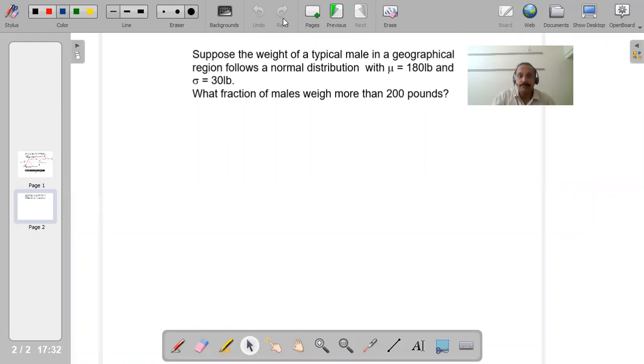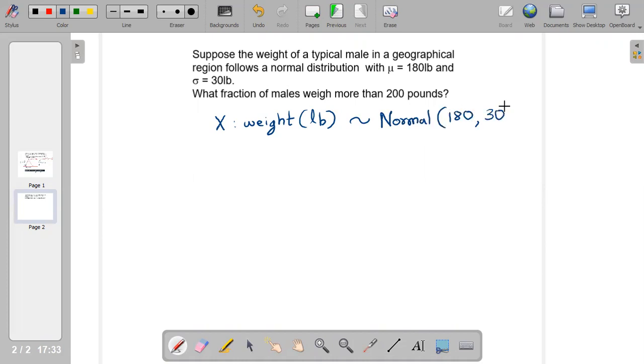So as has been given over here that X, which are basically weights, weight in pounds follows a normal distribution with mean 180 and sigma square 30 square. So over here, what has been asked is probability that X takes values more than 200 pounds.